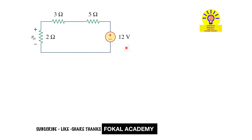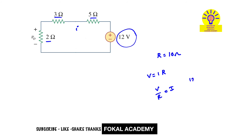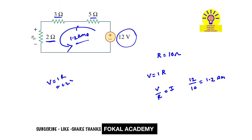Find the voltage contributed by the 12 volts source. In this loop the current is I. First find the total resistance: 2 ohms, 3 ohms, and 5 ohms are in series, so total resistance is 10 ohms. By Ohm's law V = IR, the current I = 12 volts / 10 ohms = 1.2 amperes. In the 2 ohm resistor the voltage drop is V = IR = 1.2 amperes × 2 ohms = 2.4 volts, contributed by the 12 volts source.